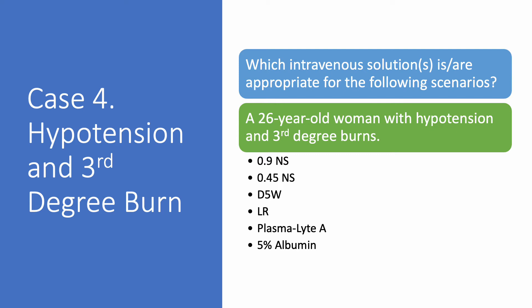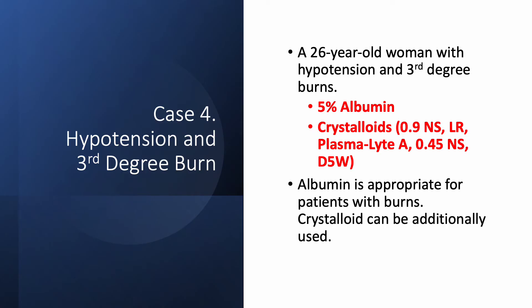Case number four: hypotension and third-degree burns. We have a 26-year-old woman with hypotension and third-degree burns. In burn patients, 5% albumin is particularly helpful. In addition to the albumin, you are going to need other solutions depending on electrolyte values, blood pressure, etc. So you give 5% albumin and then you give 0.9% saline, LR, half normal saline, D5W, or plasma light depending on the situation — you are going to need all of the above.